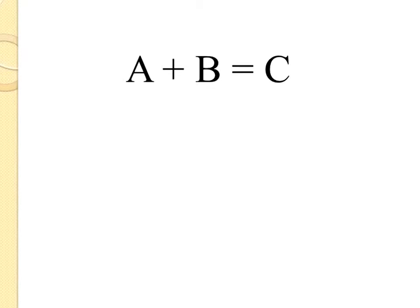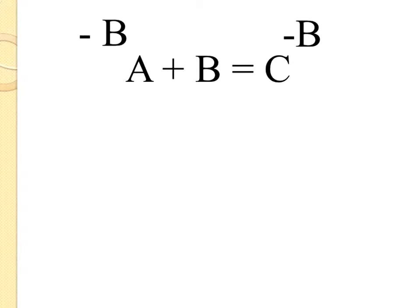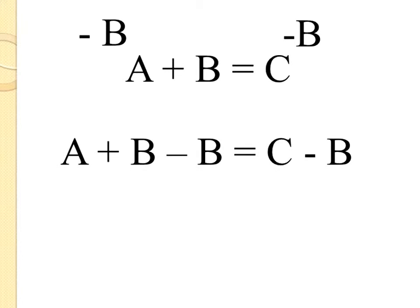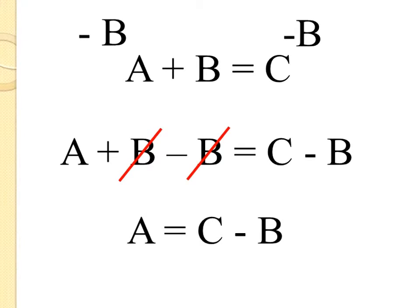I need to get A by itself, so I need to get B over here. This is going to go exactly the same way as I did with the 2. I'm going to subtract B from both sides. Once again, I'm doing the opposite. Originally it was plus B, now it's minus B. I rewrite it. I have plus B minus B. Those cancel out. And I'm left with A equals C minus B.